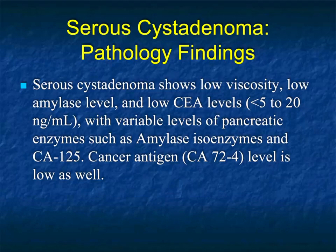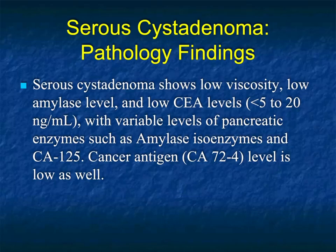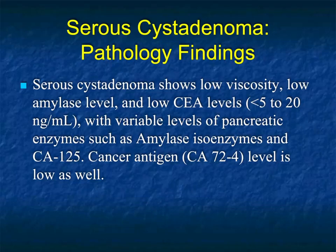In terms of pathology, serous cystadenomas show low viscosity, low amylase levels, low CEA levels, with variable amounts of pancreatic enzymes such as amylase and CA-125. CA-72-4 level is also low. There is work being done, particularly by the group at Pittsburgh, developing a test looking at the fluid of a cystic pancreatic lesion to very specifically identify it as a serous cystadenoma. We're also doing lots of work with AI and radiomics to potentially recognize serous cystadenomas based simply on their appearance.